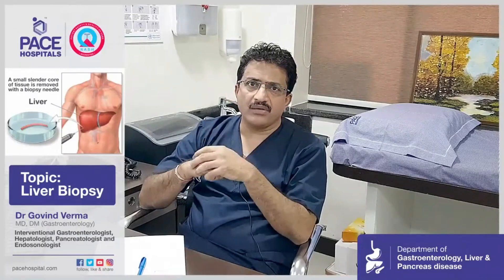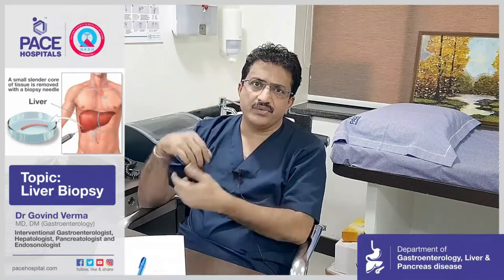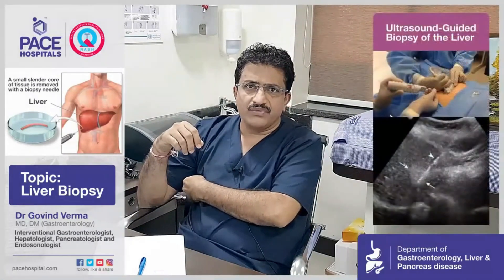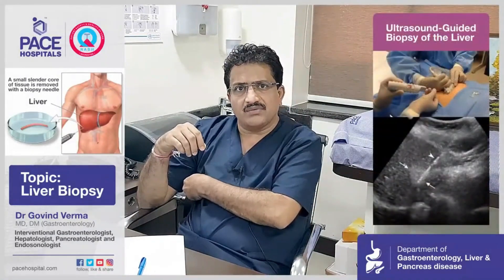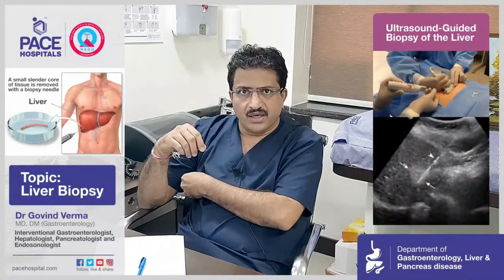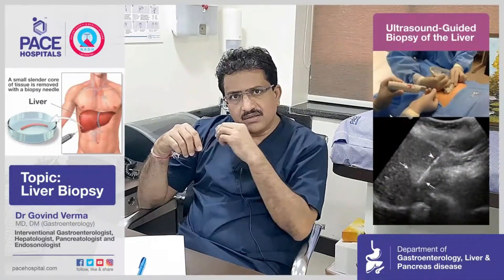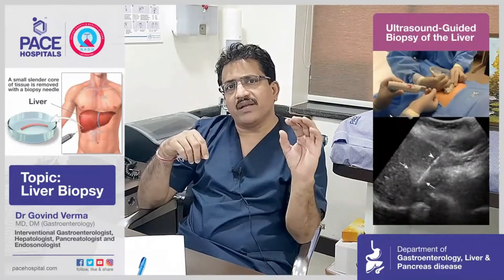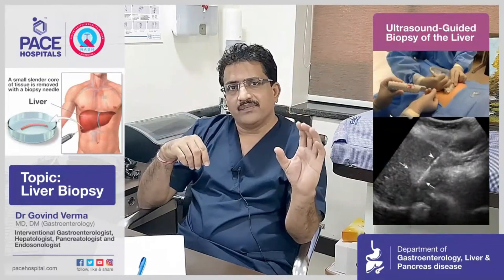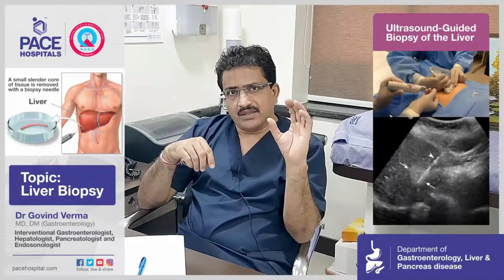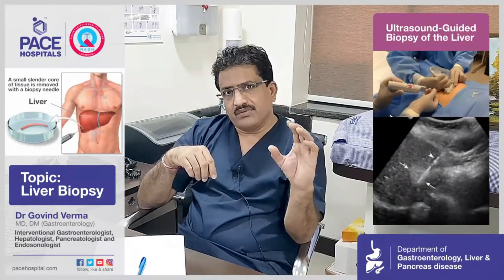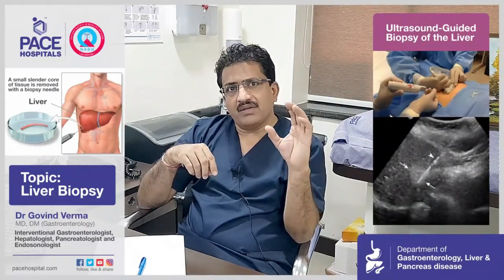There are two ways of doing it. One way is that we use the ultrasound probe, which we keep on the lateral side of the chest. That probe helps us in knowing where exactly the liver is located and whether there are any vessels in between. If there are no vessels in between, then we proceed.